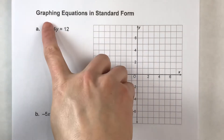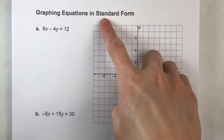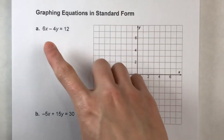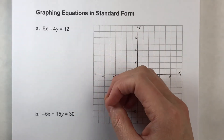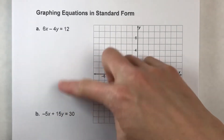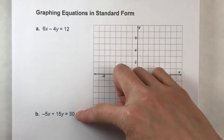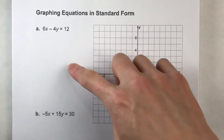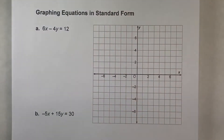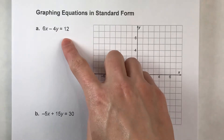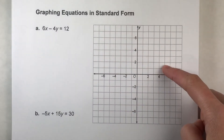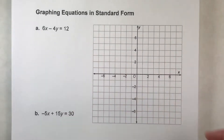So today, we are going to be graphing equations in standard form. We're used to graphing equations that are in the form y equals mx plus b. Notice these two equations are not in that format. They have x and y on the same side of the equal sign, and they're both equal to a regular number on the other side. You can't just look at this and know what the slope and y-intercept are to graph it. However, there are two ways we can graph these equations.